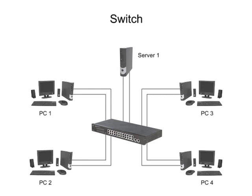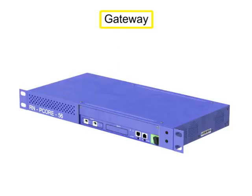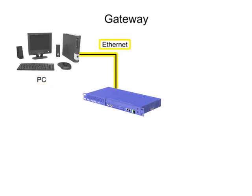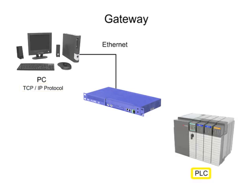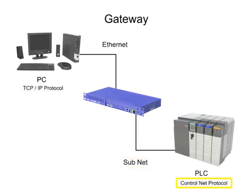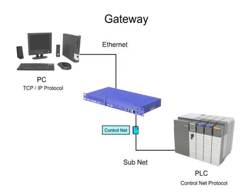When two segments of the same network have different communication formats, a gateway is needed to connect them. A gateway performs a conversion function so that a computer on an Ethernet network using a TCP/IP protocol may communicate with a PLC on a subnet using the ControlNet protocol. Even though these two protocols are incompatible, the gateway can connect them on the same network and allow them to function together.